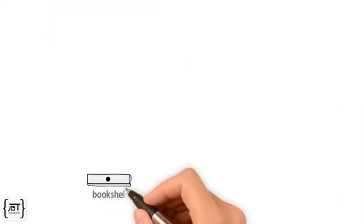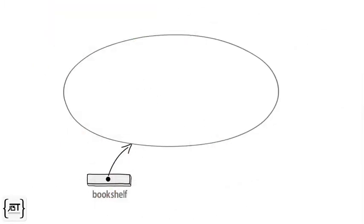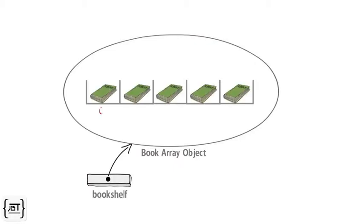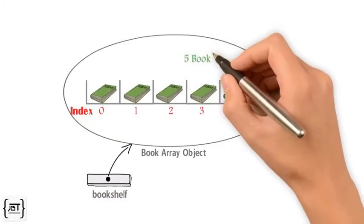Here, bookshelf is a reference variable of type book array since it points to a book array. And there is an array that contains five elements of type book.